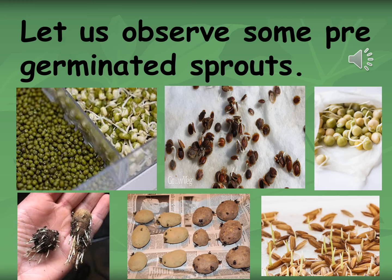Now, can you look at these pictures, children? These are some pre-germinated sprouts. That means these seeds are already sprouting tiny little stems, so these seeds are ready to grow into plants. Can you see the different types of seeds here? You can see seeds in green gram, potatoes, kidney beans, and rice. Next time you can see these seeds, and if you try to grow them, you can also see how these tiny sprouts come out when you plant them in a pot.